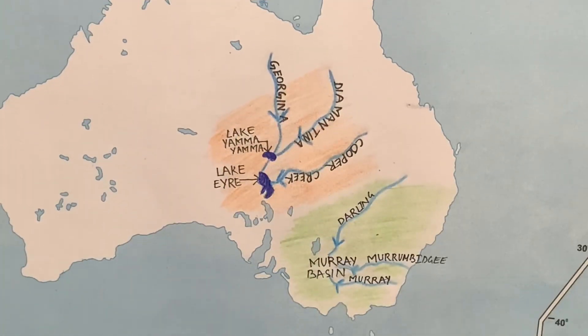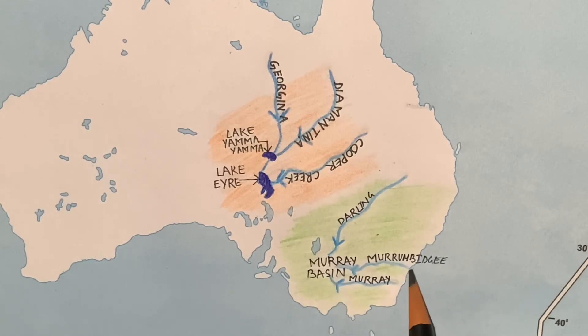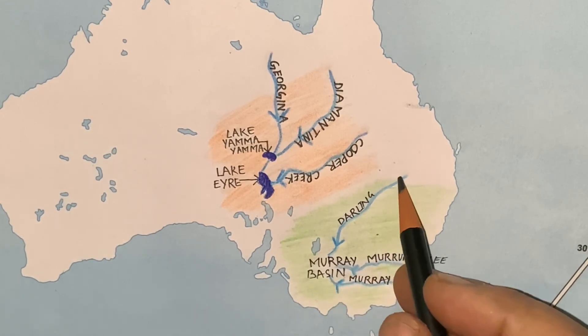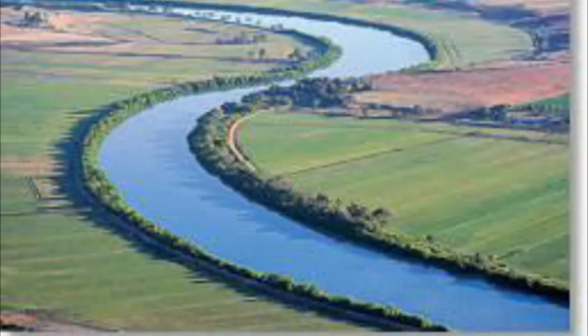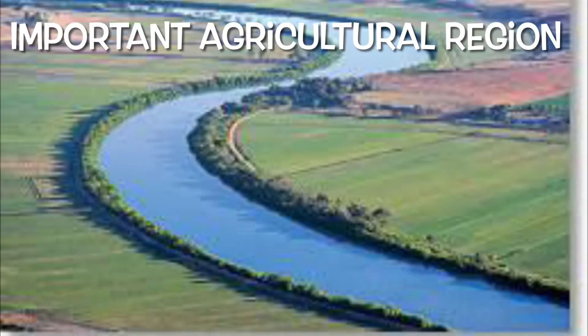This region is drained by the River Murray and its tributaries, the River Murrumbidgee and the Darling River. These rivers carry huge amounts of silt and deposit it over the plains, making the land very fertile. Thus, this basin is one of the most important agricultural regions of Australia.